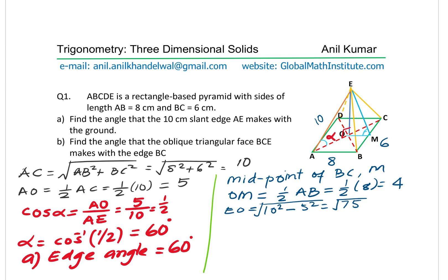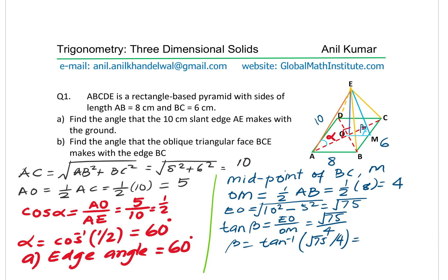Calling the angle beta: tan β = EO/OM = √75/4. So beta equals tan⁻¹(√75/4). Using the calculator — shift, tan inverse, square root of 75 divided by 4 — that gives 65.2 degrees. So the face BCE makes an angle of 65.2 degrees with edge BC. That is the answer for part B.